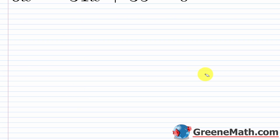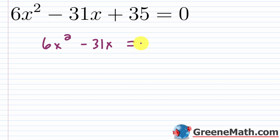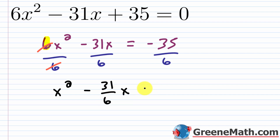For completing the square, move variable terms to one side: 6x² − 31x = −35. Then divide everything by 6 so the coefficient of x² is 1, giving x² − (31/6)x = −35/6.